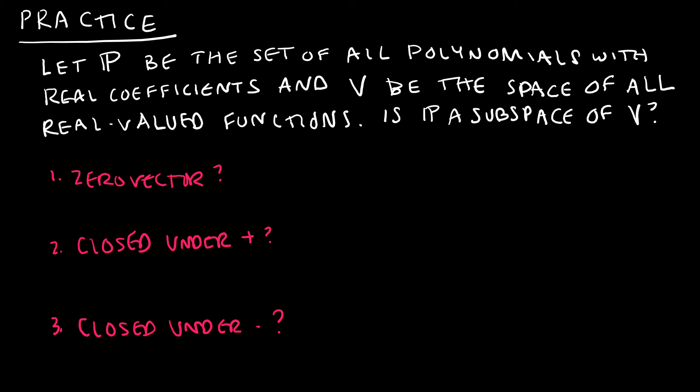Here's another question for us to look at. Let P be the set of all polynomials with real coefficients, and V be the space of all real valued functions. They're telling me V is the space of real valued functions, meaning V does meet all of those 10 axioms. V is the space of all real valued functions, not just polynomials, but any real valued function. The question is, is P, which is the set of all polynomials with real coefficients, a subspace of V? So I wrote zero vector, but here essentially I'm saying zero polynomial. Is that in the set? Obviously, it would make sense that I could have the polynomial 0.